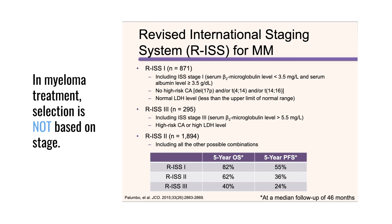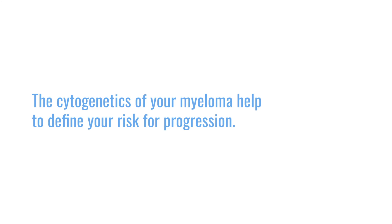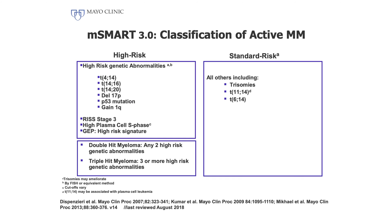In general, if you take a standard risk patient and a high risk patient, they tend to respond similarly to therapy, but the high risk patient will unfortunately relapse sooner. So part of our understanding of the disease is knowing what type of cytogenetic abnormalities you have, because that helps us understand what type of myeloma you have — whether it is more high risk or more standard risk.